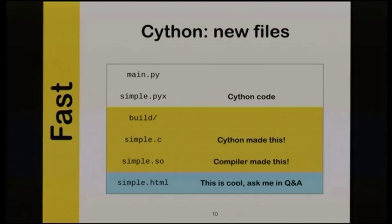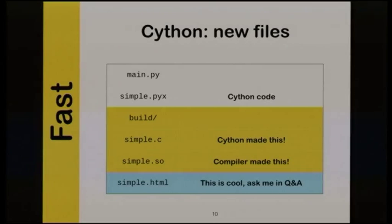When we ran EasyCython on simple.pyx, a build folder comes from the compilation process. simple.c is a C file that Cython made from our .pyx file — Cython converts your .pyx file into a C file — and simple.so is the binary shared object you get after compiling the C file and linking it against Python. You run 'easycython simple.pyx' and that gets produced. It's not too complicated.